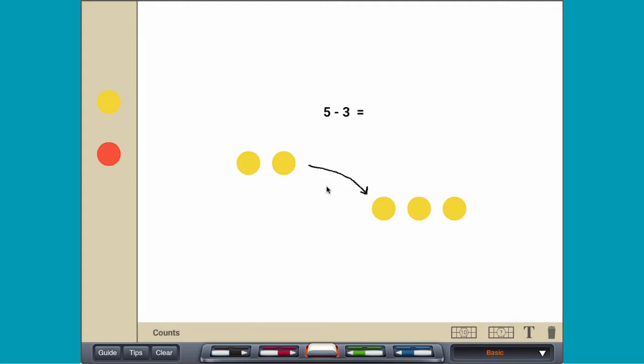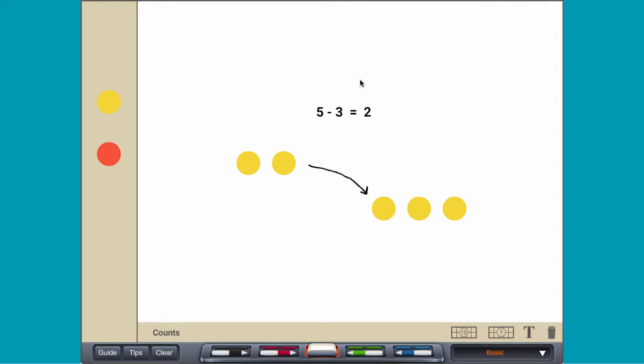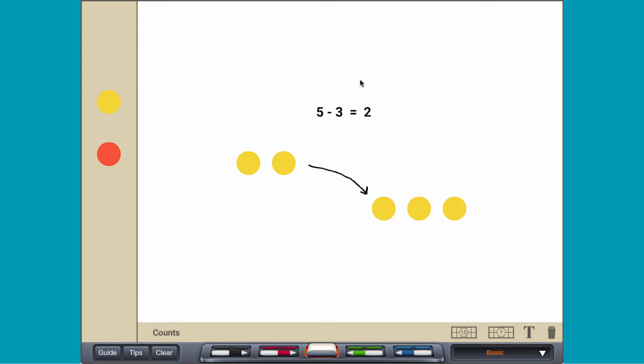There are two counters remaining, so 5 minus 3 equals 2.